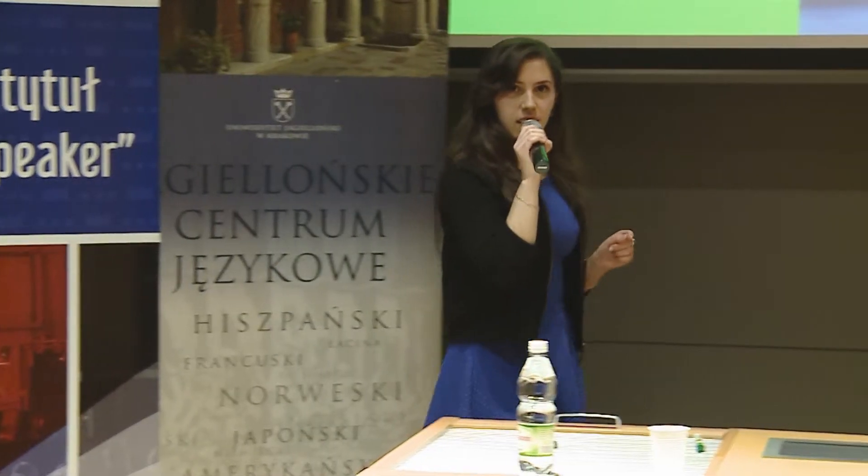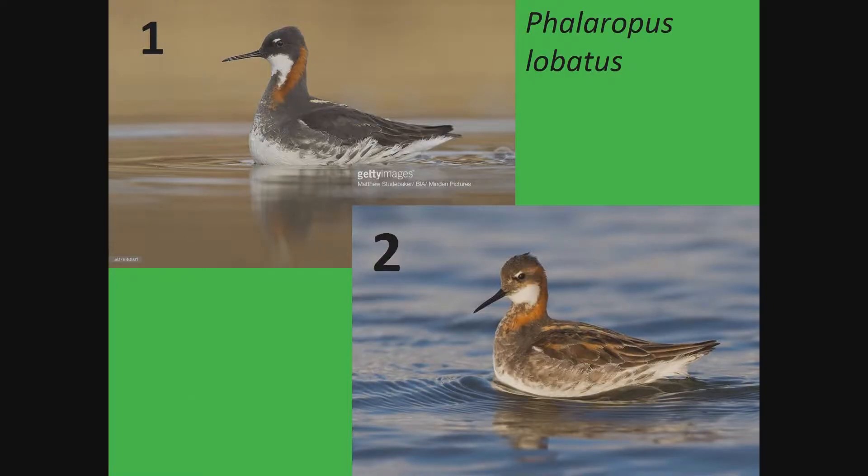What's more, in this species, the female calls the male's attention to her and she starts the courtship display. Also, she chooses a nest and defends it. So she's more aggressive than a male. She lays eggs, of course, but she leaves her husband with sitting on them and bringing up the chicks. So she definitely dominates in this relationship.